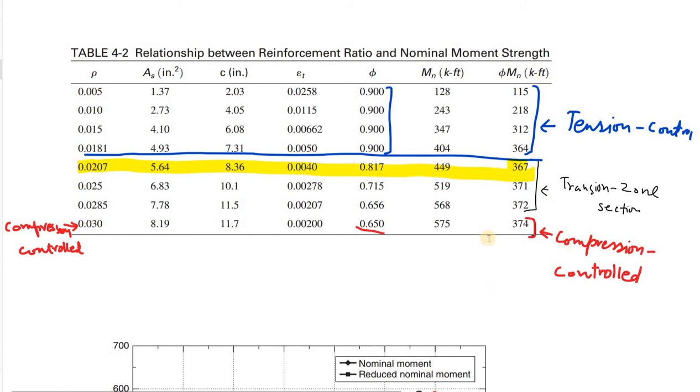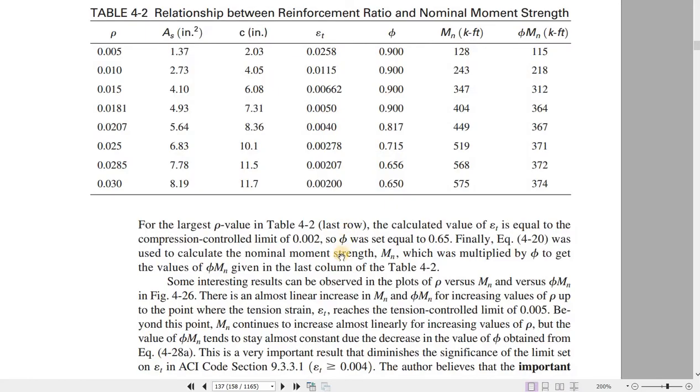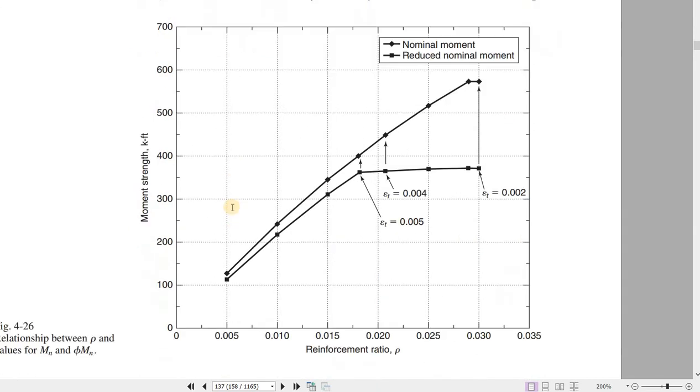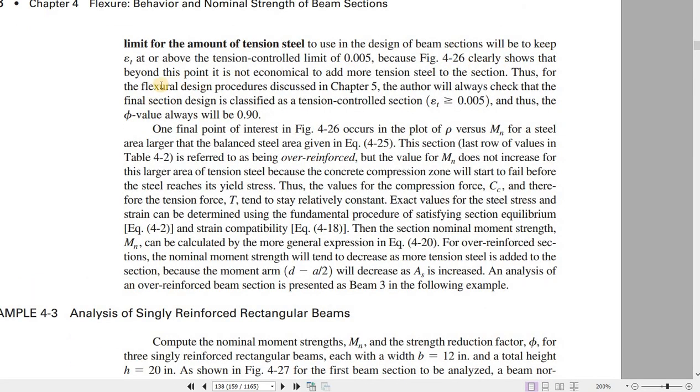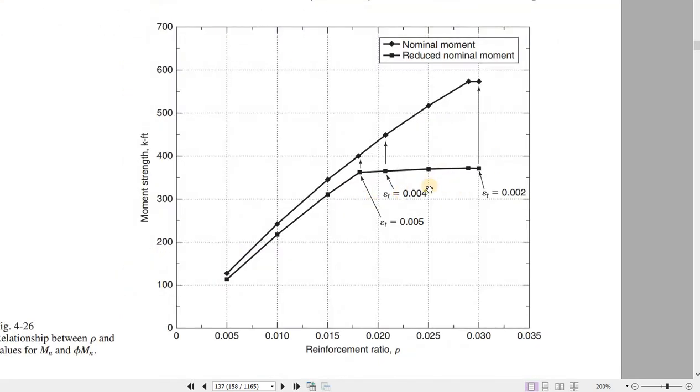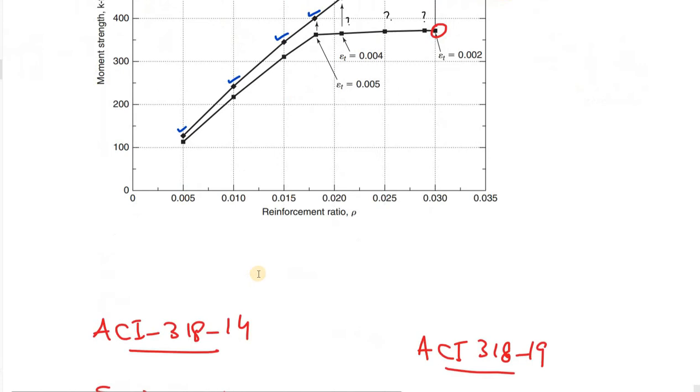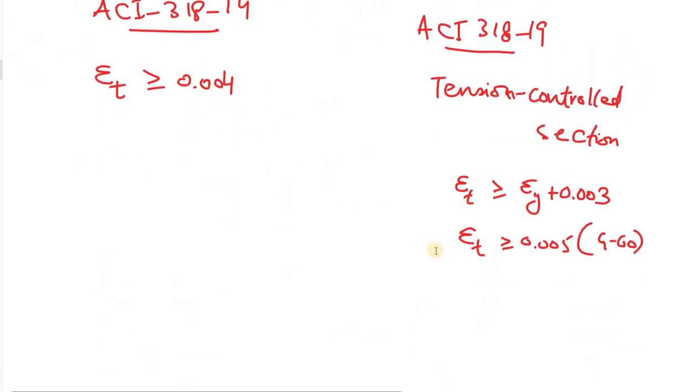This book was written based on the 2014 code before the 2019 code was even released, but the author has very clearly said in the comments that the author believes that the important limit for the amount of tension steel to use in the design of beam sections would be to keep epsilon_t at or above the tension-controlled limit of 0.005, because Figure 4-26 clearly shows that beyond this point it is not economical to add more tension steel to the section. This is why this book has already adopted the requirement of epsilon_t equal to or greater than 0.005. However, the code has also now finally accepted this. So the 2019 code no more accepts a section with epsilon_t equal to or greater than 0.004 for grade 60.